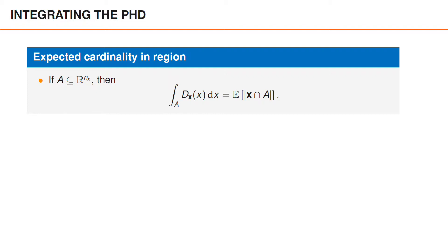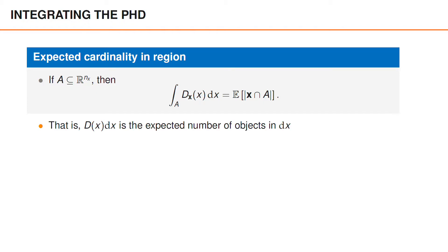A good way to build intuition for the PHD is to study some of its properties. Perhaps the best example is to integrate the PHD over some subset A of the single-object state space. Doing that gives us the expected number of objects in the subset A. We can write this as the expected value of the cardinality of the intersection of the set boldface x and the set A. Taking the product of the PHD and an infinitesimally small region dx gives us the expected number of objects in the region dx.